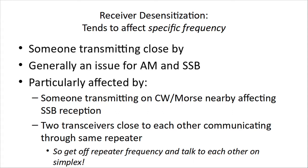The next one is receiver desensitization. This one tends to affect a specific frequency. Someone is transmitting close by — it's usually an issue with AM and single sideband transmission. It's particularly affected by somebody transmitting on CW Morse nearby that's affecting your SSB reception. Two transceivers close to each other communicating through the same repeater can be affected by this, so get off the repeater and talk to each other on simplex.